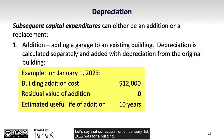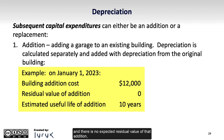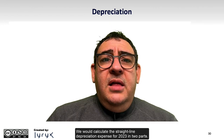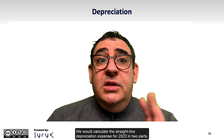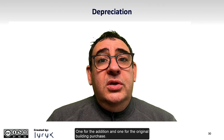Let's say that our acquisition on January 1, 2022 was for a building, and then on January 1, 2023, an addition of $12,000 was added to the building. There is no expected residual value of that addition, and the estimated useful life of the addition is 10 years. We would calculate the straight-line depreciation expense for 2023 in two parts: one for the addition and one for the original building purchase.